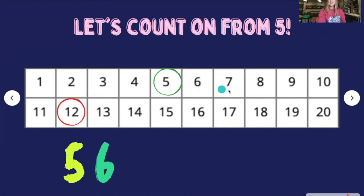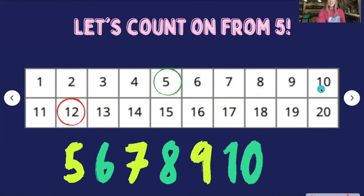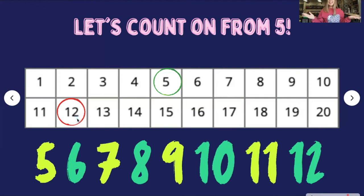5, 6, 7, 8, 9, 10. Uh-oh. I ran out of numbers in that row. Take your finger and put it where you think I need to go next. If you moved your finger down to this number 11, you're right. We return sweep. We go down to the next line and back at the beginning. Let's keep counting. Ready? 11, 12. We made it. We counted up to 12 starting at the number 5. Great job.